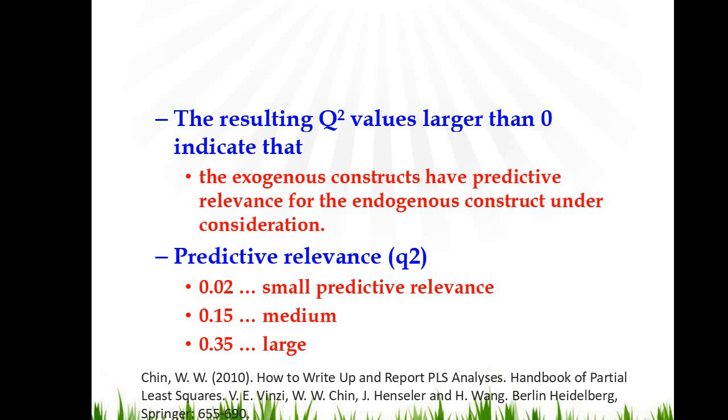On the other hand, if the value of Q-square is larger than 0, that indicates that the exogenous constructs have predictive relevance for the endogenous construct under consideration.